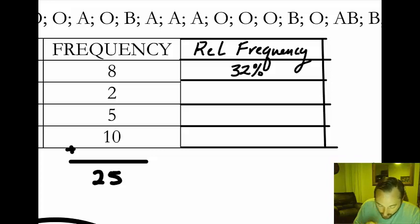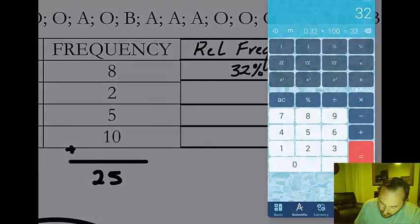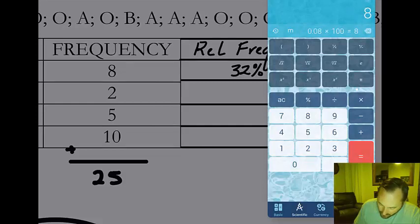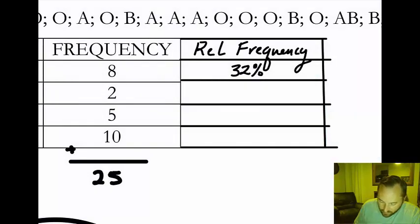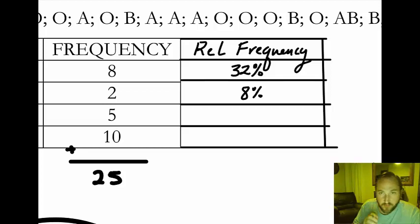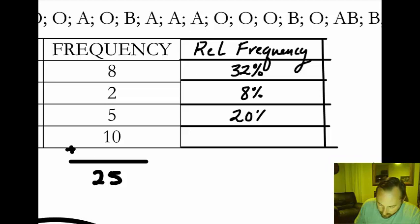Next one: 2 divided by 25 gives us 0.08, times 100, giving us 8%. Next, 5 divided by 25 is one fifth, that would be 20%. And the last one is going to be 40%.